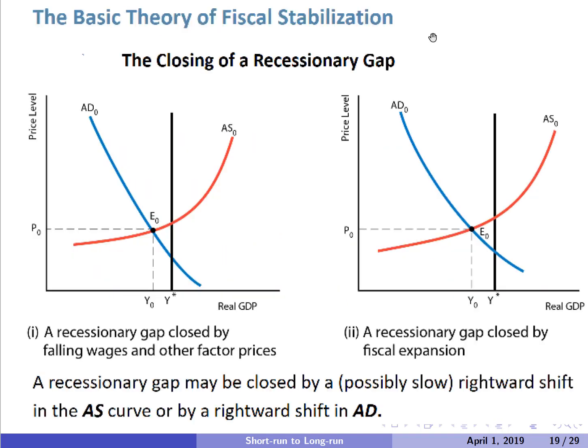Here's the basic theory of fiscal stabilization. Both graphs show the same situation: a recessionary gap has opened up, where actual Y₀ is less than potential Y-star. We can think of two different ways to close this gap. One way is downward pressure on wages and other factor prices, slowly shifting the AS curve to the right. The other is fiscal stabilization policy — responding to the recessionary gap by increasing government purchases or changing the tax system.